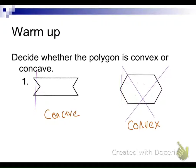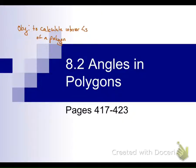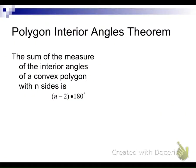Okay, so I'm going to clear the slide. We are on 8.2 angles and polygons. And our objective is to be able to calculate the interior angles of a polygon. So the polygon interior angles theorem is the sum of the interior angles of a convex polygon. It's going to be the number of sides minus 2 times 180. So n is the number of sides.